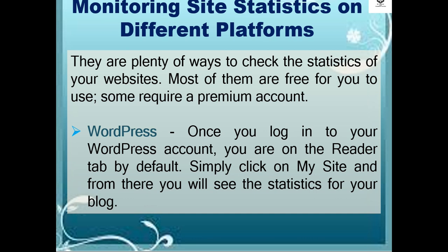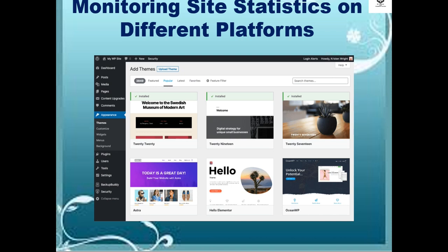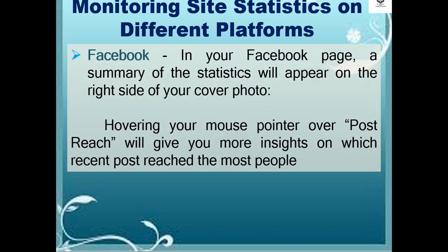Once you log into your WordPress account, you are on the Reader tab by default. Simply click on My Site and from there you will see the statistics for your blog. On Facebook, a summary of the statistics will appear on the right side of your cover photo.